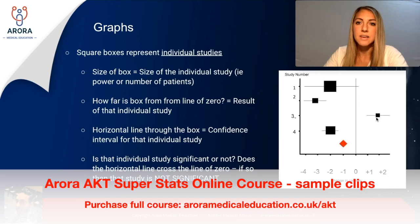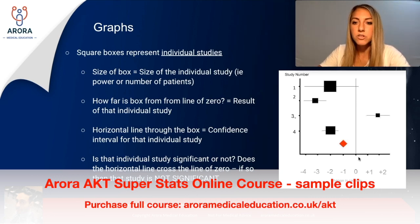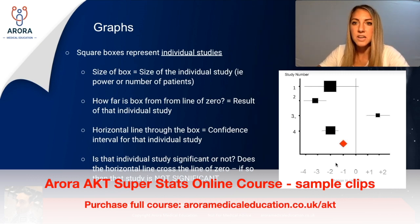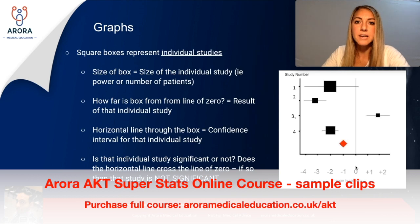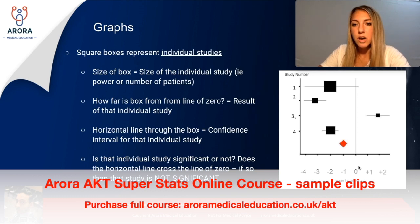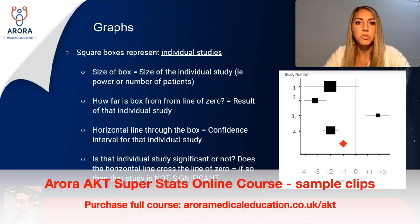The second thing to look at is how far the box is from the line of no effect. In this particular forest plot, the x-axis represents a change in calcium, so the line of no effect is zero. But in some cases you might get odds ratios or risk ratios reported along this x-axis, and if you do, the line of no effect might be crossing one vertically rather than zero. That's because a risk ratio or odds ratio result of one means there's no difference in the event occurring between the groups studied.